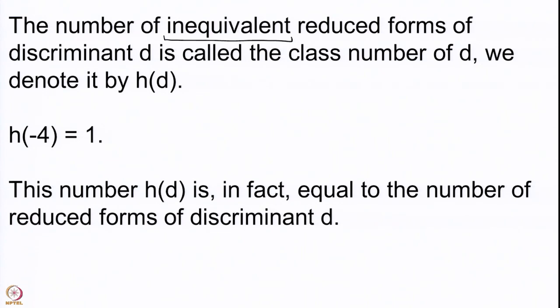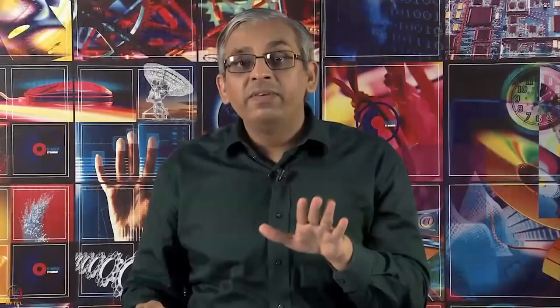Now we come to the next observation: h(d) is in fact equal to only the number of reduced forms of discriminant d, which means the phrase 'inequivalent' is redundant. If there are two reduced forms which are equivalent, then they have to be the same — different reduced forms cannot be equivalent to each other. This is the next theorem that we are going to prove, but first there are some intermediate lemmas we will state and prove.